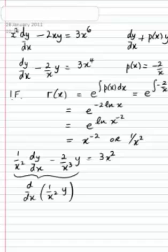And to check that, you could use the product rule. If you use the product rule on 1 over x squared y, you'd write down the first term, 1 over x squared, multiplied by the derivative of the second, which is dy dx. So this gives you the first term here.